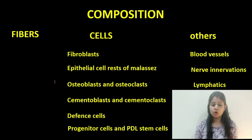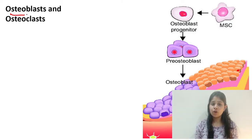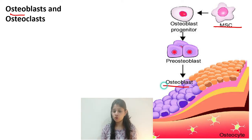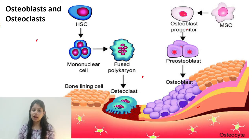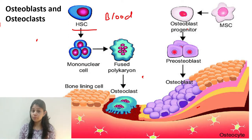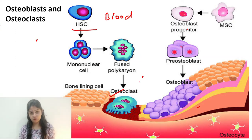The third cell type are the osteoblasts and osteoclasts. The term 'osteo' is synonymous with bone. Osteoblasts are derived from mesenchymal stem cells and differentiate to form mature osteoblasts, which help in bone deposition. Osteoclasts, on the other hand, are derived from hemopoietic stem cells — from the blood lineage — and differentiate from monocytes to produce mature osteoclasts responsible for bone resorption.